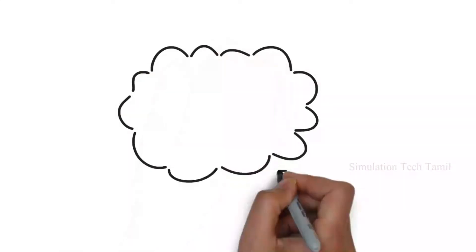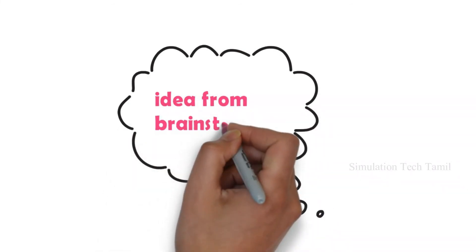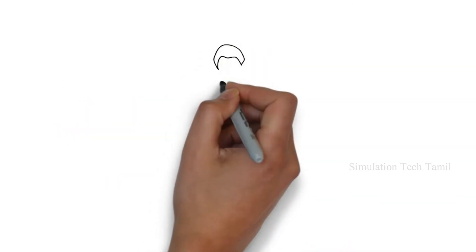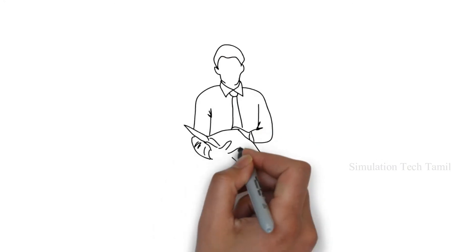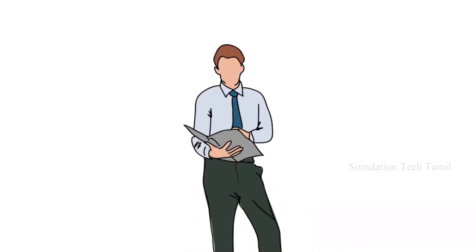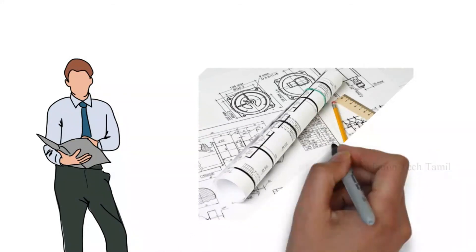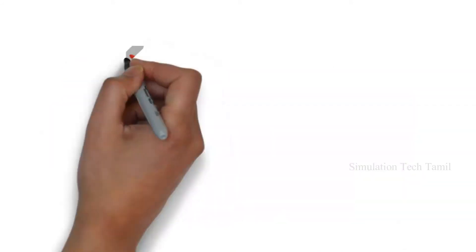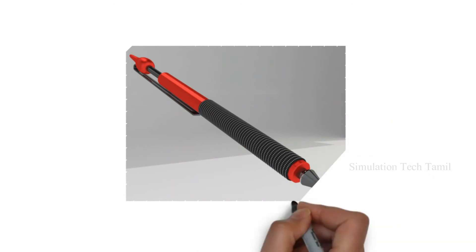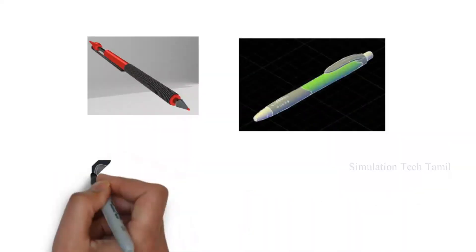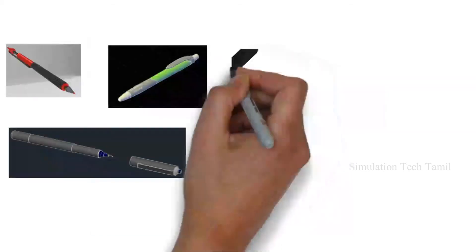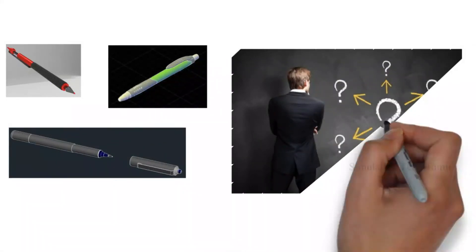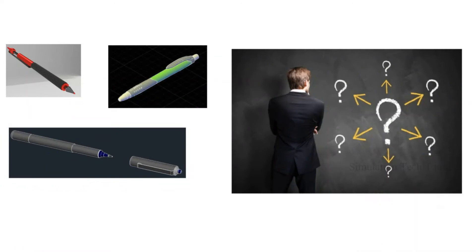What do we do in CAD? As a CAD engineer, using a brainstorming idea — for example, we have a pen to manufacture with certain features — we have to do the design. If we have a design, we can do the design and take responsibility for our customers. If you have one idea, you can create multiple designs — say, four different designs — and compare them.